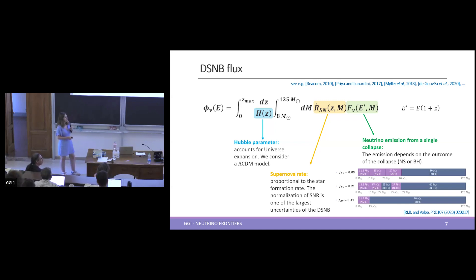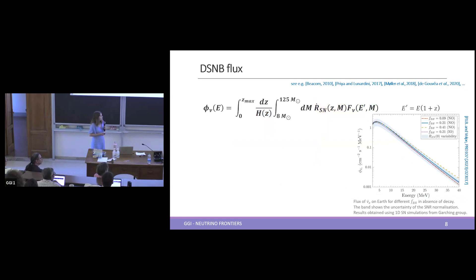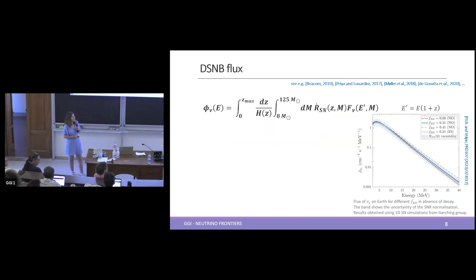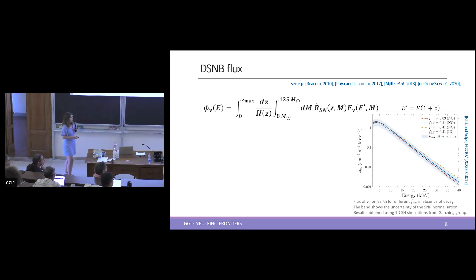This diagram shows different mass regions: in purple are masses that end up forming a neutron star, and in blue the mass ranges for which the collapse ends up forming a black hole. With this we obtain the electron anti-neutrino flux on Earth, and we can see the difference between the three black hole fractions. The larger the black hole fraction, the larger the flux at the high-energy tail, which is the most interesting region for detection. The blue band shows the uncertainty from the supernova rate normalization.